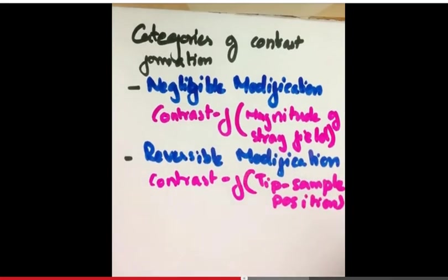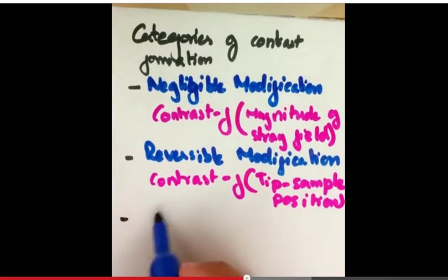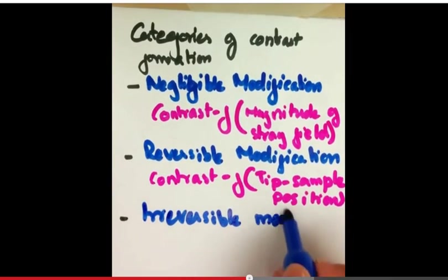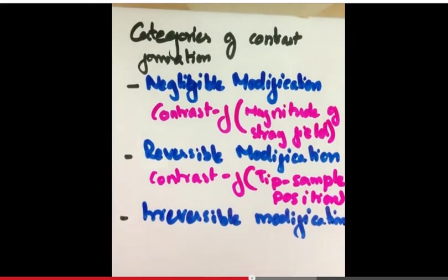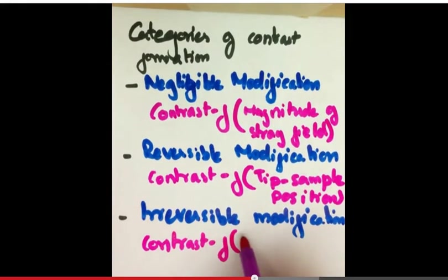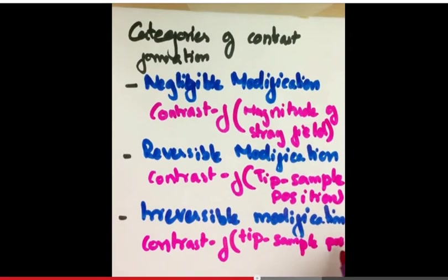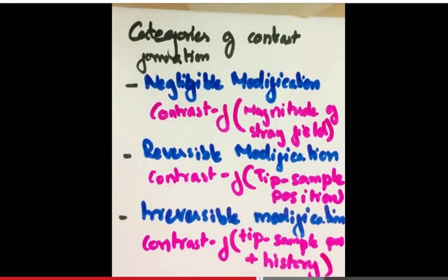In irreversible modification, the interaction of the tip and the sample causes an irreversible change to the tip sample position. In this case, contrast is not only a function of the current tip sample position, but also of its previous state.